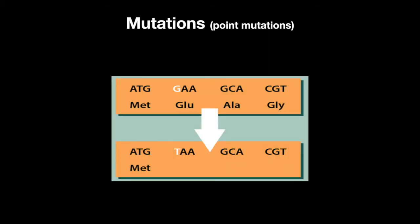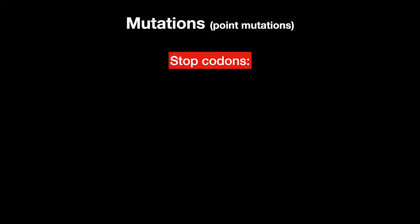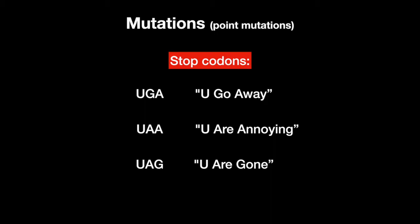If the point mutation results in creating a stop codon, this is called a nonsense mutation. The stop codons are UGA, UAA, and UAG. Remember: you go away, you are knowing, and you are gone. This usually makes the protein non-functional. Remember, stop the nonsense.